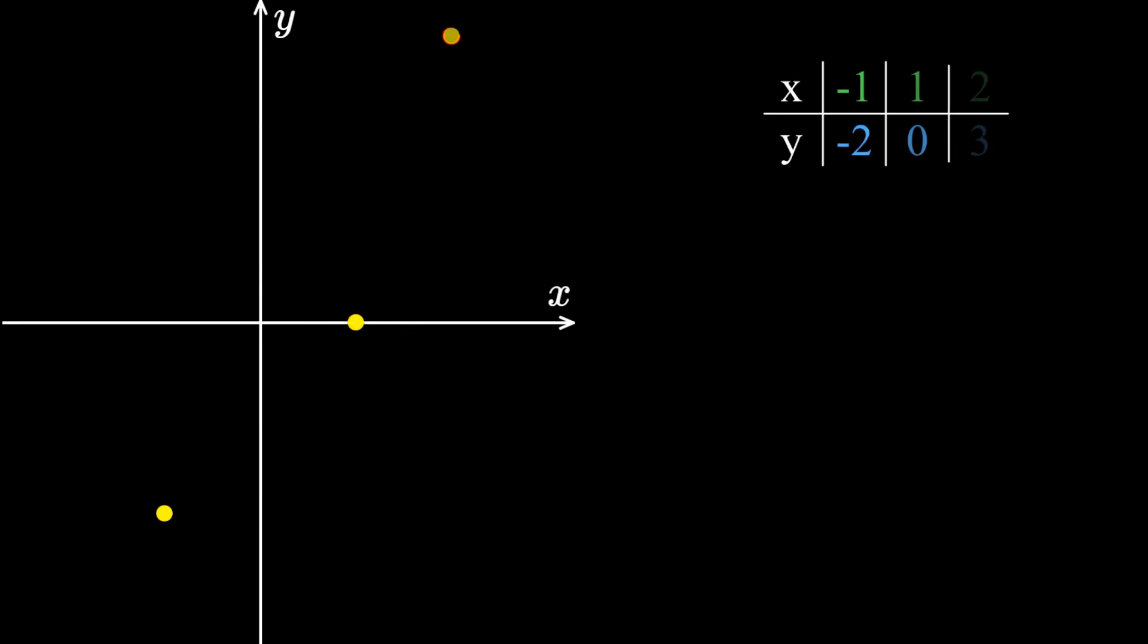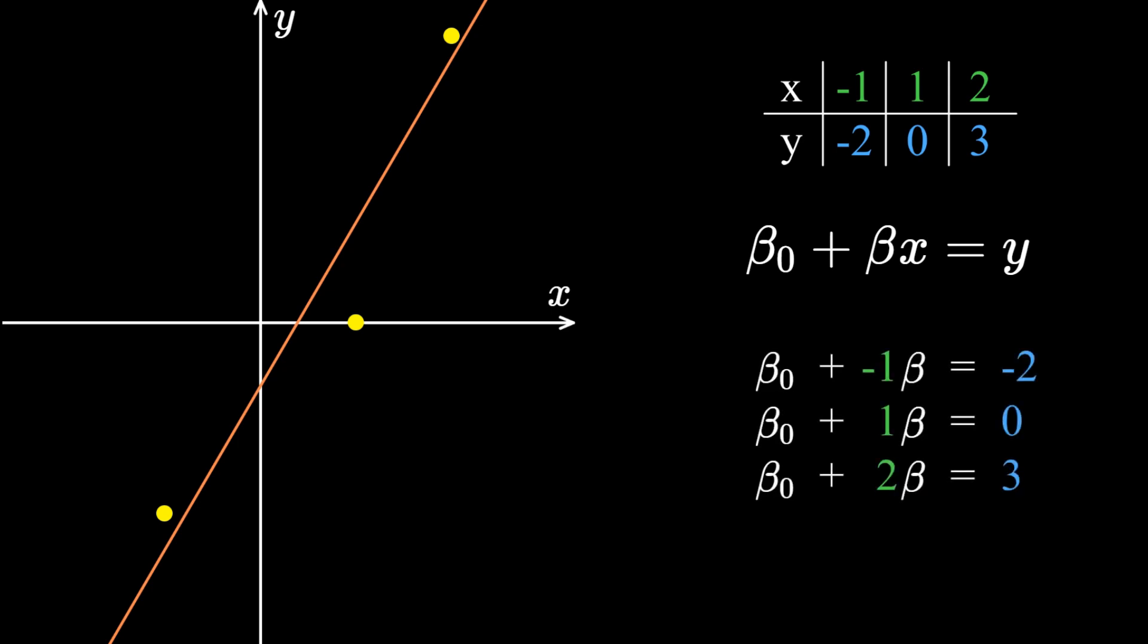For simplicity, let's assume for now that there are only three points on the graph. We want to find a line that passes through all three points and plugging in all of the coordinates, this means that all of these three linear equations should be satisfied.